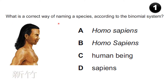What is the correct way of naming a species according to the binomial system? The options are: A) Homo Sapiens, B) homo sapiens, C) Human being, D) Sapiens. The issue is whether the species name should be capitalised or not. Always remember: the first letter of the genus should be capital and the first letter of the species should be a simple (lowercase) letter. So the answer is A: Homo sapiens.